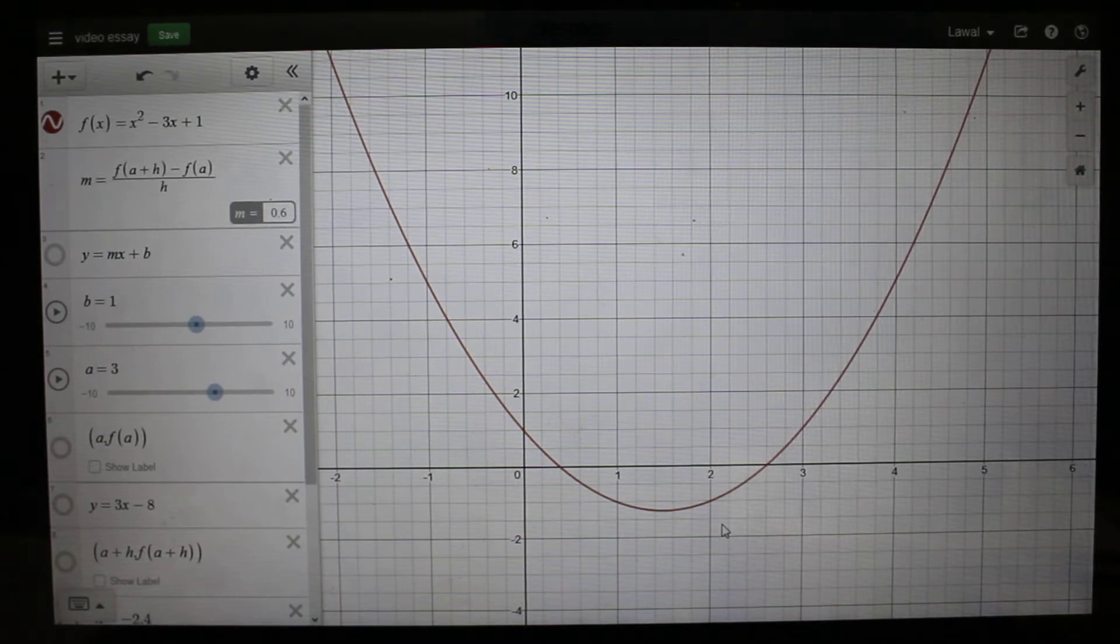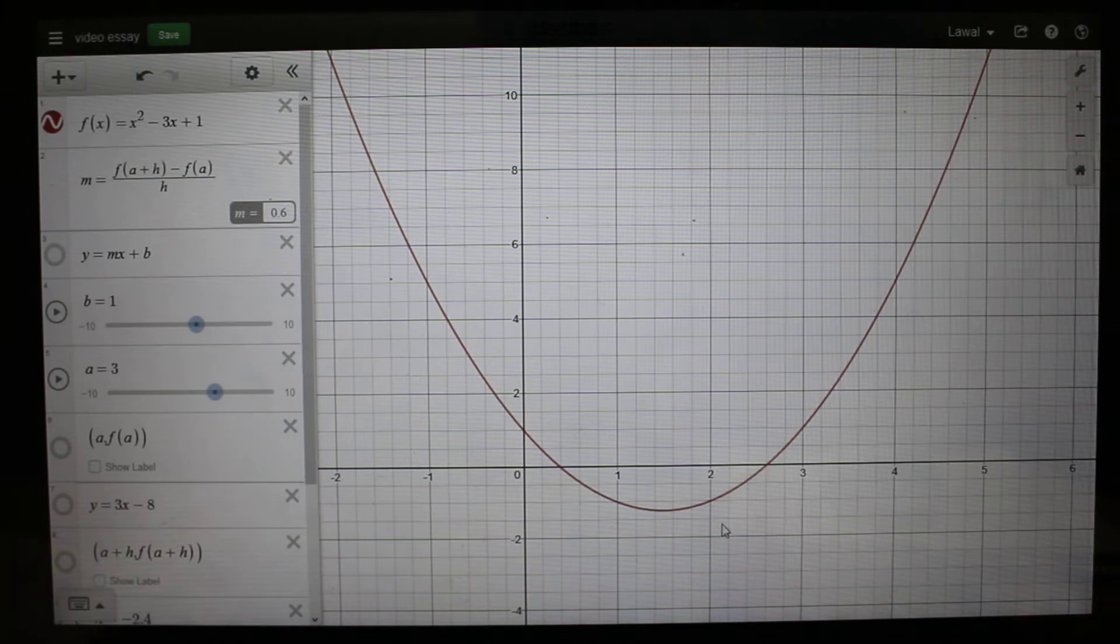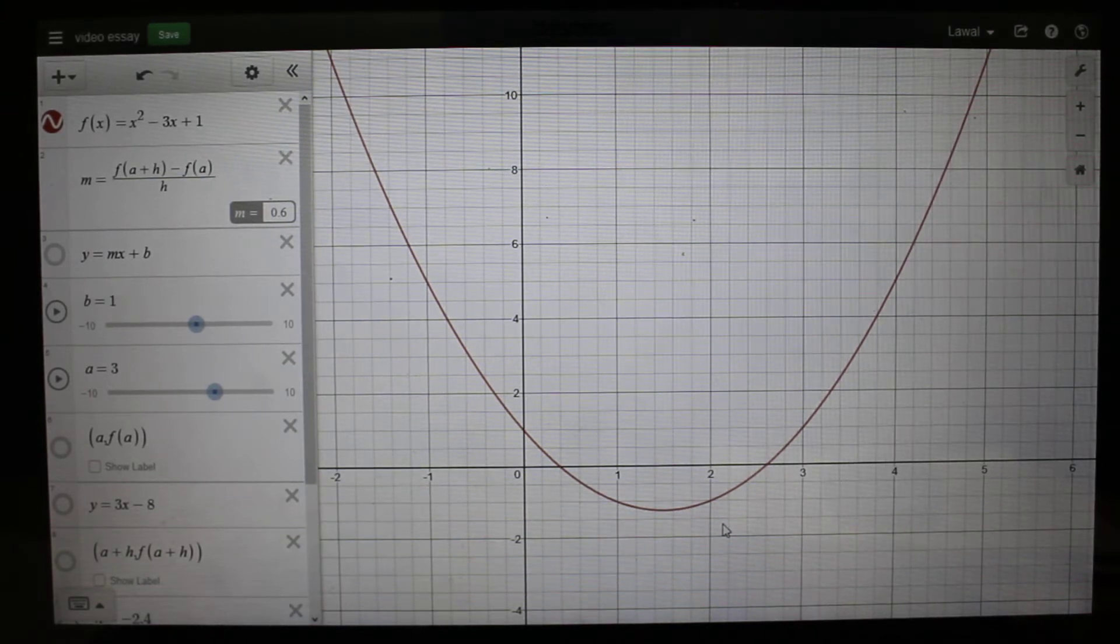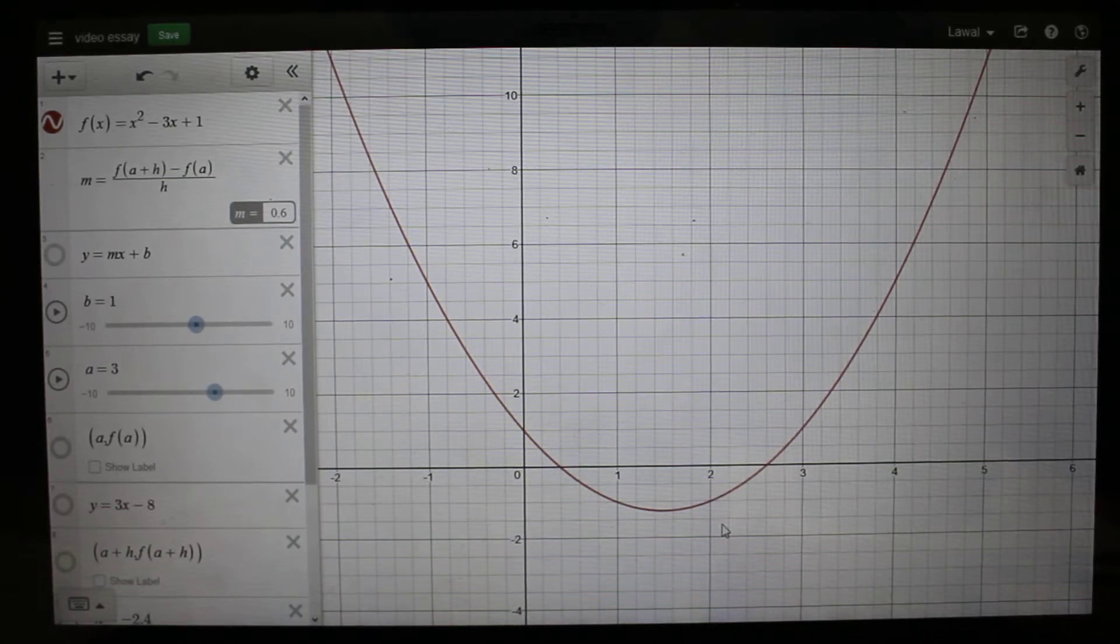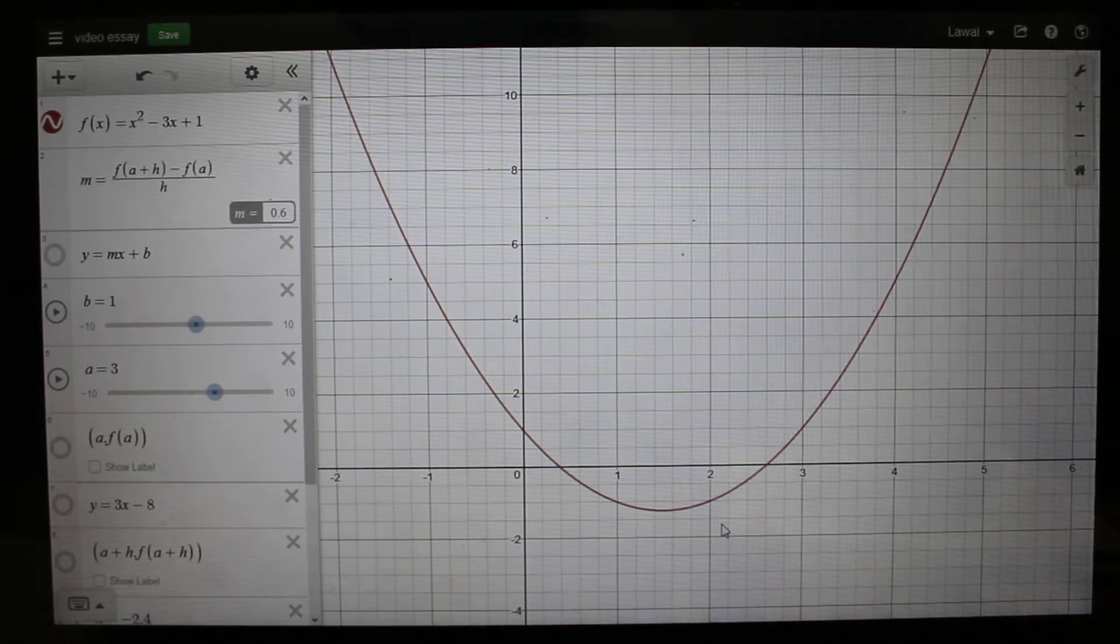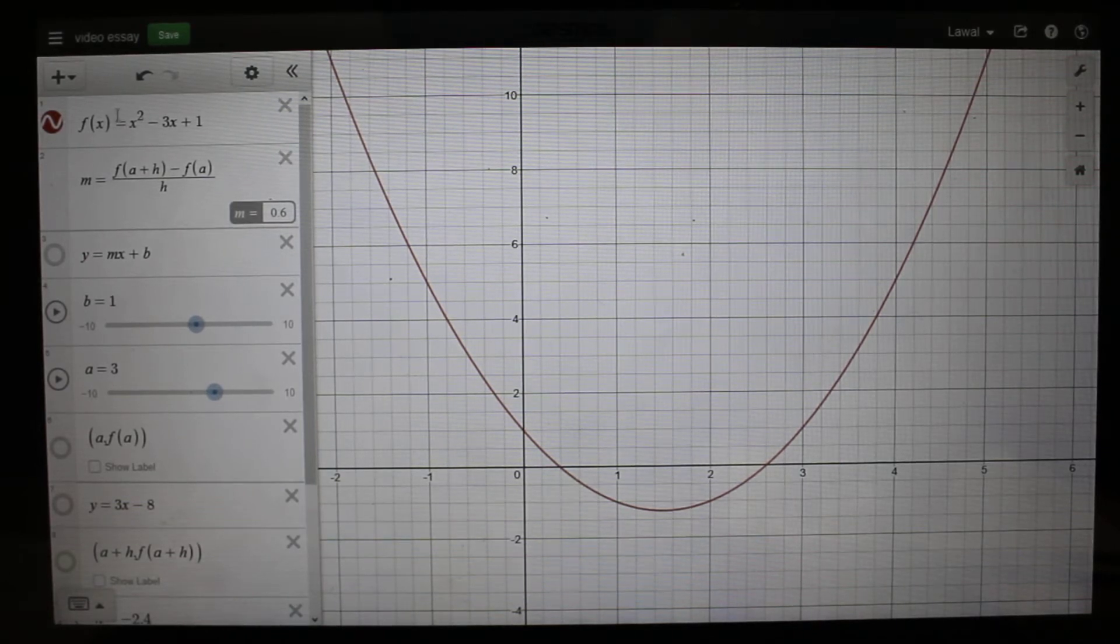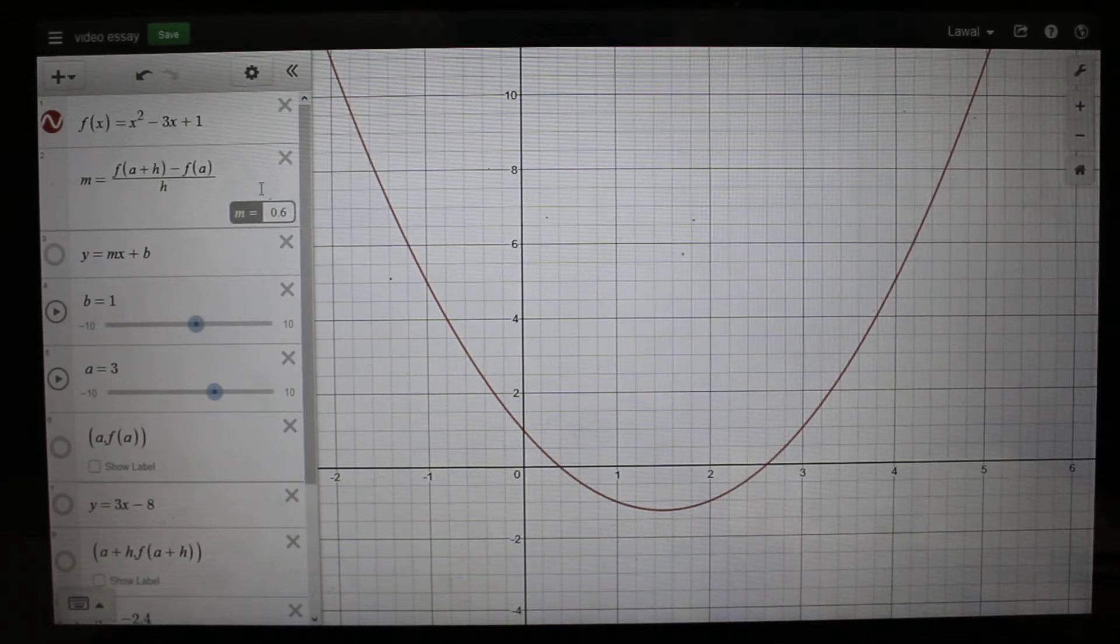Hello everyone, today I'm going to be explaining the instantaneous rates of change from the preceding side. In class we're given an essay where we're going to demonstrate an understanding of the development of the IRC formula using limits. I start with my function, f(x) = x² - 3x + 1.